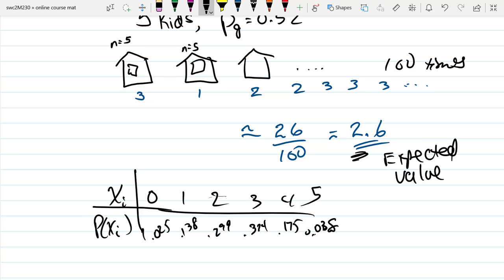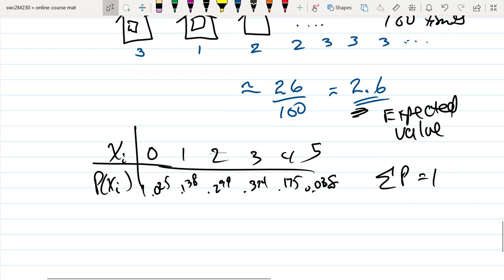So that was our probability distribution table, and don't forget the summation of all of those will always add up to 100%. In order for us to get the expected value, or the average number of girls in each household...